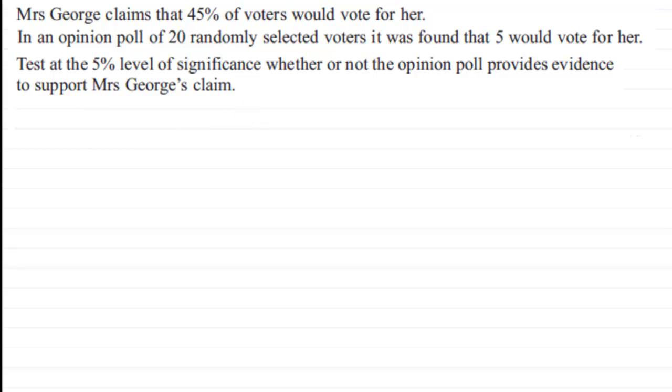To do something like this, what we first need to do is define a random variable. I'm going to call it X. Let X be the random variable, and it's going to represent the number of votes for Mrs. George.